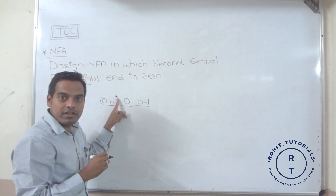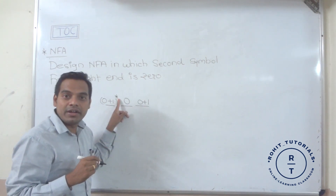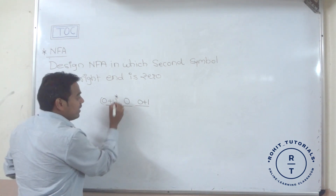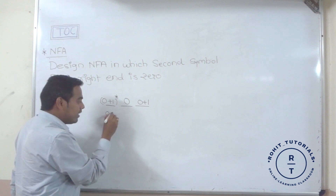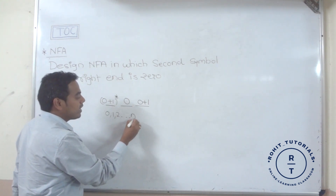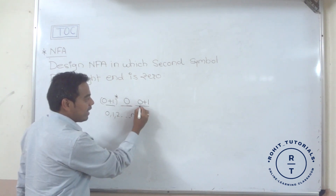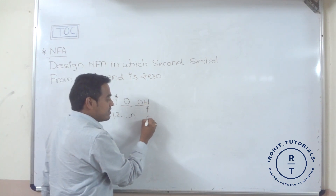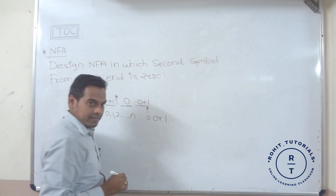The closure property will be discussed in the regular expression unit. So, (zero plus one) star means zero or one can appear any number of times — zero times, one time, two times, and so on. Then zero is present, followed by a single zero or one at the end.